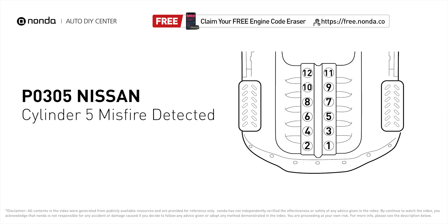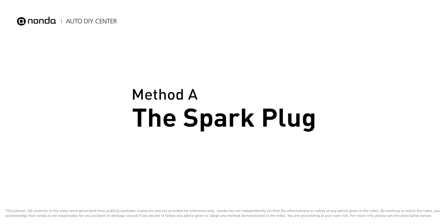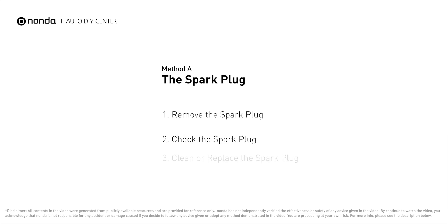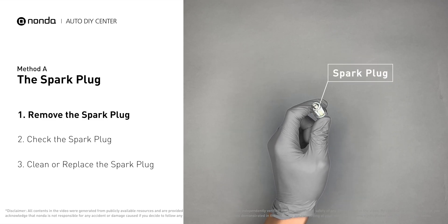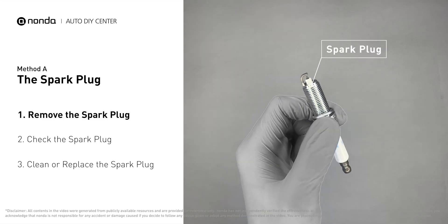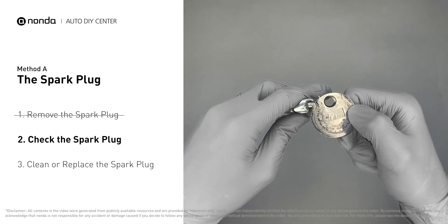Here are two of the most practical solutions to fix Nissan's P0305 error code. Method A: the spark plug. The spark plugs are located at the engine end of the wires, under the plug covers that attach them. First, carefully remove the spark plug, then use a spark plug gapper to check the spacing.